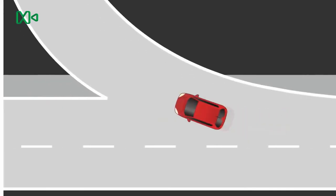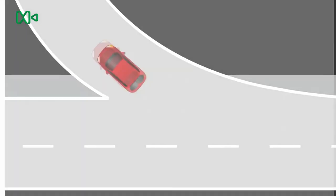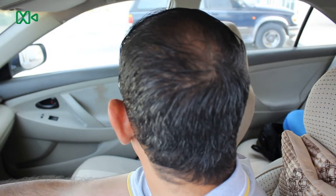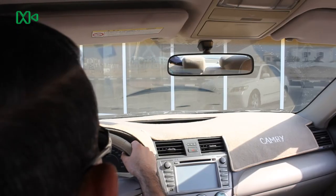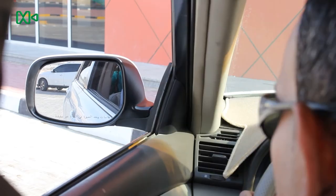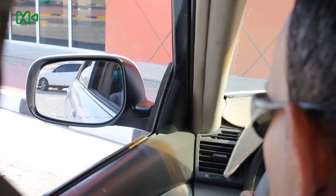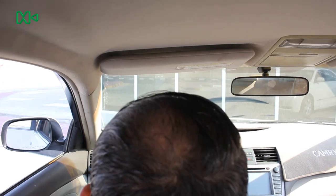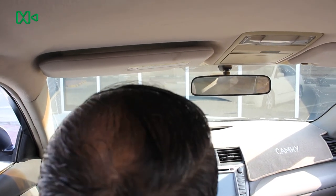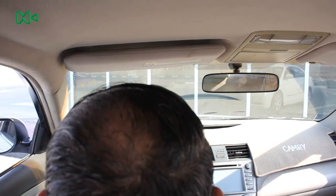Important note: our movements must be clear to the examiner. This means, for example, that the examiner must be able to see us checking the required mirrors when performing an overtake. We must also check the internal and side mirrors throughout the entire exam period so that the examiner can see us doing so.